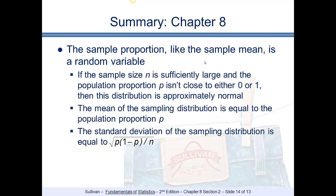To summarize: the sample proportion, like the sample mean, is a random variable. If the sample size n is sufficiently large and the population proportion p is not close to either 0 or 1, the distribution is approximately normal. The mean of the sampling distribution equals the population proportion p, and the standard deviation of p-hat is the square root of p times (1 minus p) divided by n.